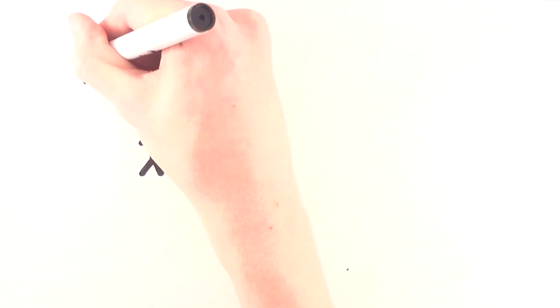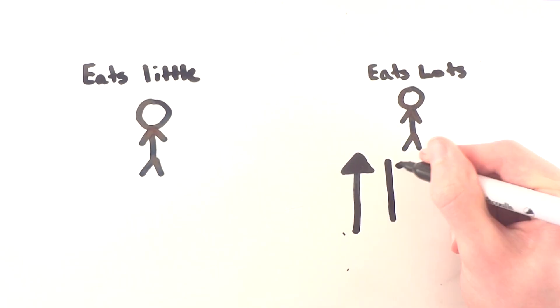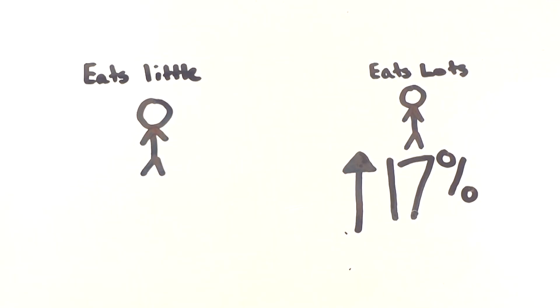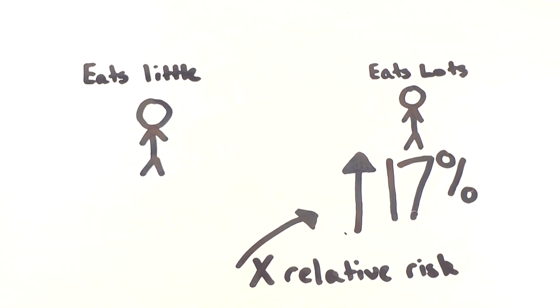The report found that those who eat the most processed meat have around a 17% higher risk of developing bowel cancer compared to those who ate the least amount of processed meat in the study. This might sound like quite a big risk between those who eat the most and those who eat the least, but this is where the confusion comes into play, because 17% is a relative risk. We need to look at this in absolute terms, not relative.